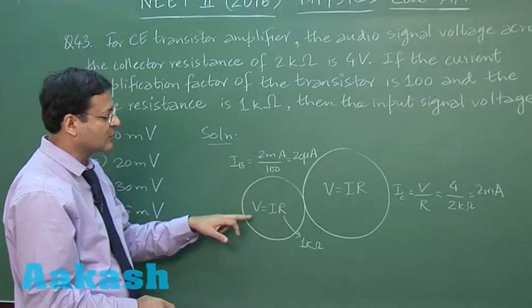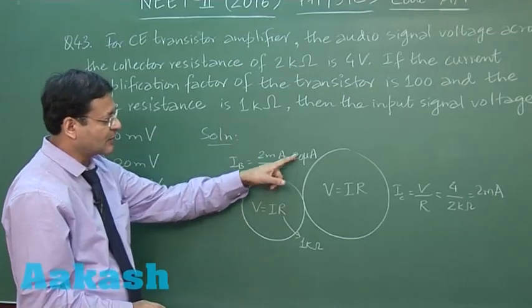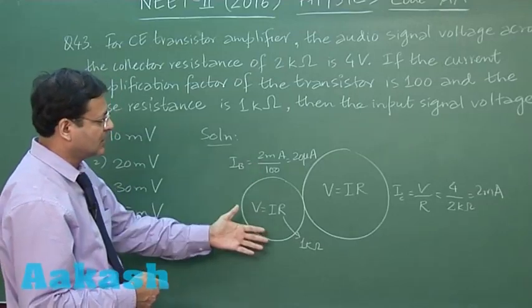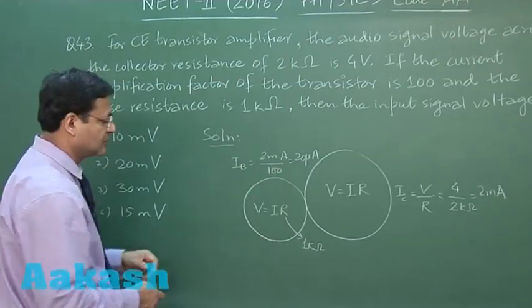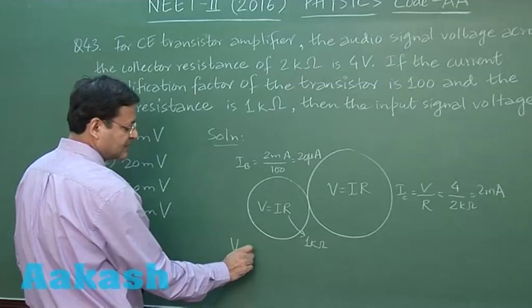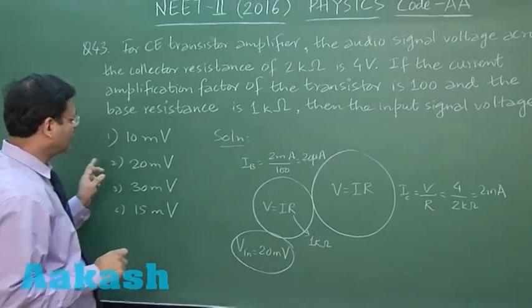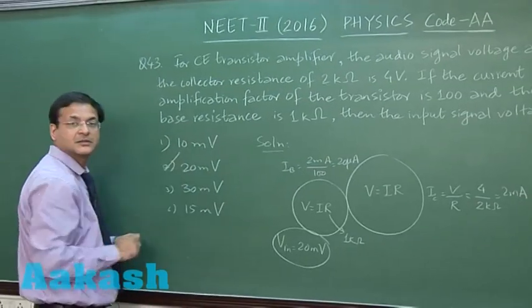Now they ask you what is the input signal voltage. This is what is required. I is 20 microampere multiplied by 1 kΩ, which will make it 20 millivolt. So the input voltage is 20 millivolt. This is your answer.